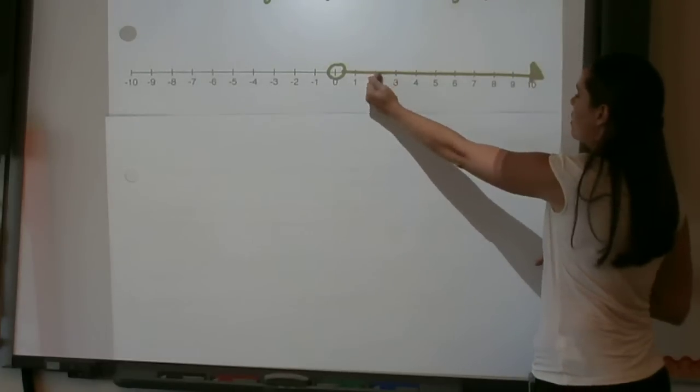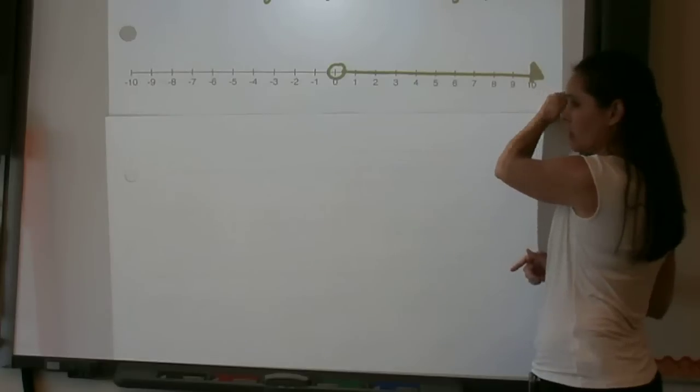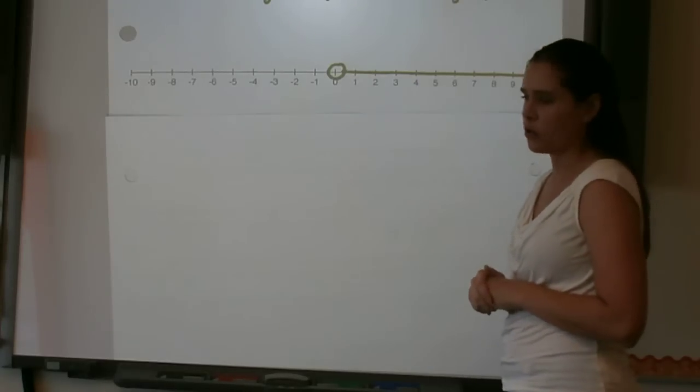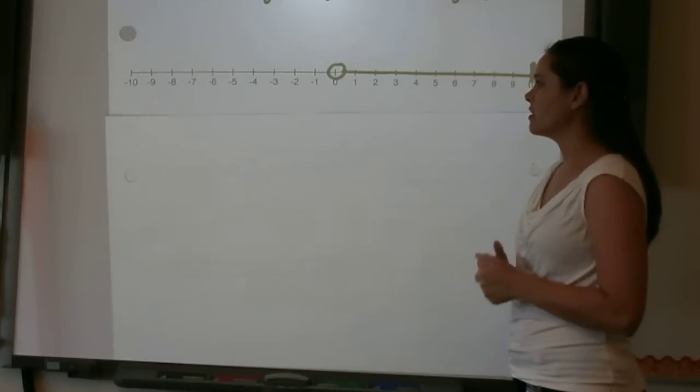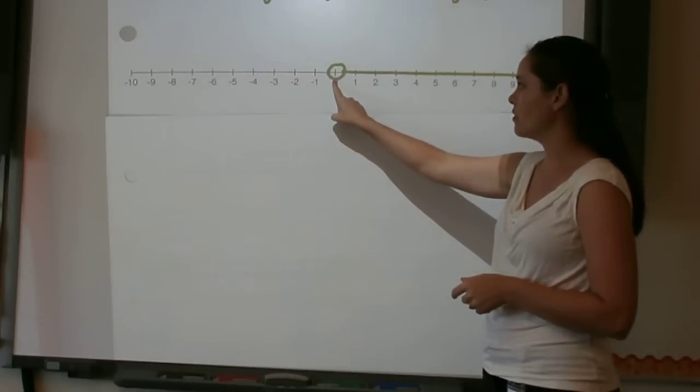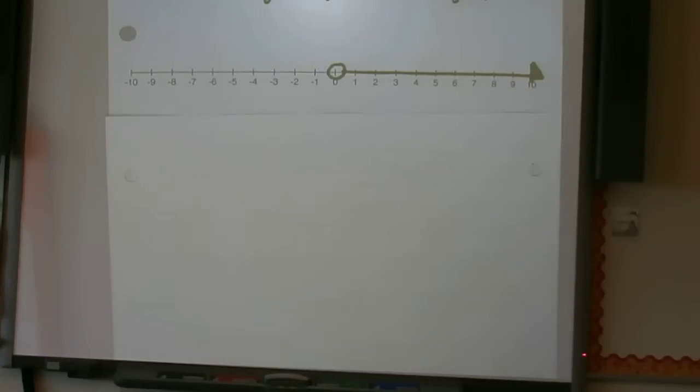So anytime we see a graph going in the right-hand direction, we're going to know it's greater than. The question is, is it greater than and equal to, or is it just greater than? And that is where the circle comes in, whether or not it's an open or closed circle.